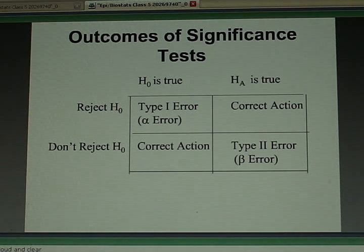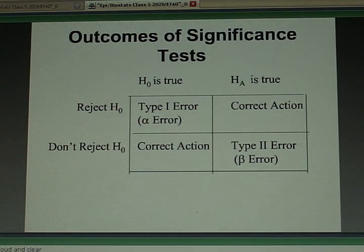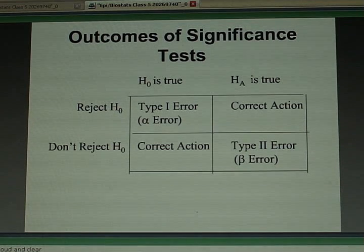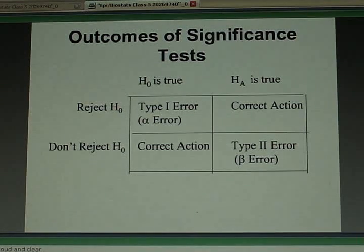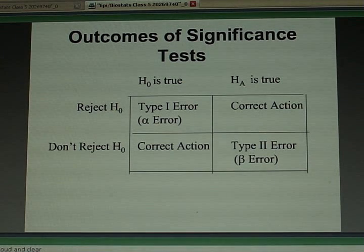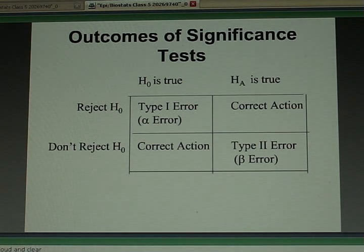On the other hand, if the null hypothesis were not true, the alternative hypothesis is true, and you are rejecting the null, you're making a correct statement. So by rejecting, you might be making a mistake or you might be doing the right thing.